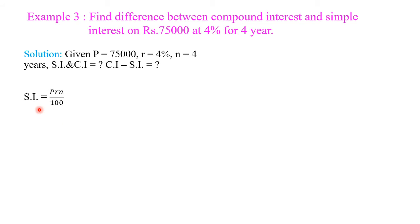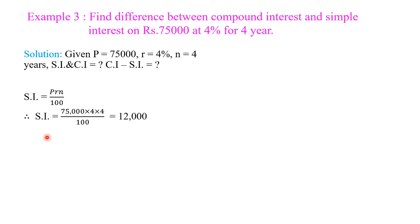Simple interest is equal to P times r times n divided by 100. Putting the values in this formula, we get simple interest equal to 75,000 into 4 into 4 divided by 100, which equals 12,000.